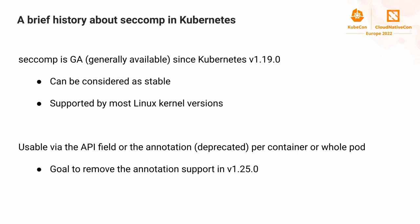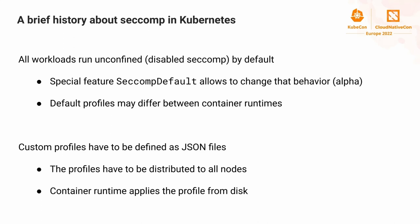Seccomp supports most Linux kernel versions, though there are some environments where it may not be supported, such as certain architectures or Linux distributions. The seccomp fields are usable via a native field in the security context or a deprecated annotation, applicable at the pod or container level. Profiles applied to pods are inherited by containers. The overall goal is to remove annotation support in 1.25. All workloads run unconfined by default, meaning seccomp is disabled. A special feature called seccomp default allows changing that behavior, but it's alpha and default profiles may differ between container runtimes.